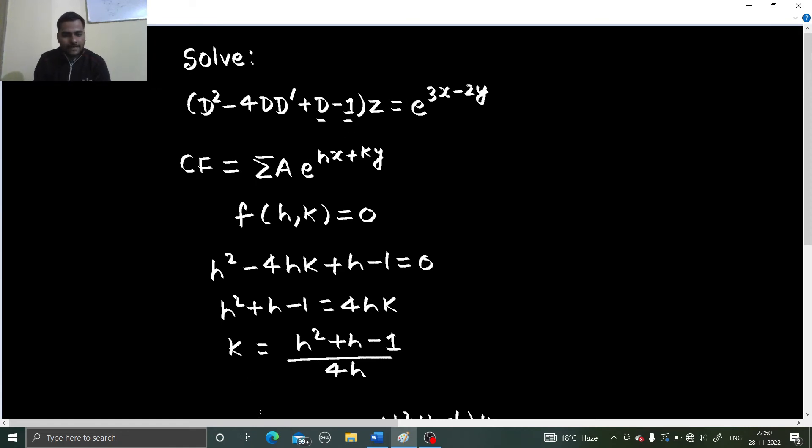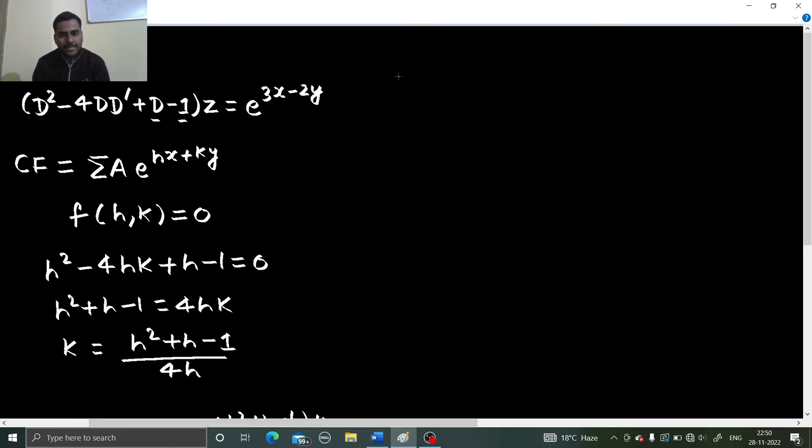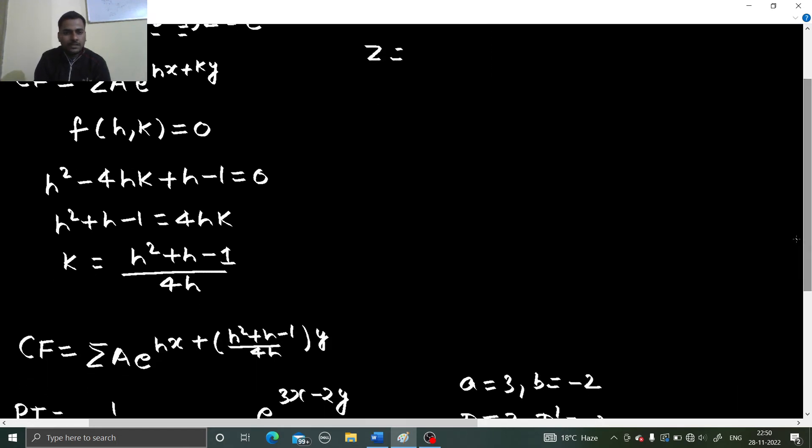You have found cf. You have found pi. Time to write the final answer which is z equals to cf plus pi. So z equals to what is your cf? Your cf is summation a e power hx plus h square plus h minus 1 divided by 4h, h y plus your pi which is 1 upon 35 e power 3x minus 2y. There you go. This is your final solution.